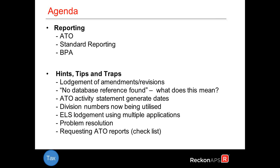We're also talking about hints, tips, and traps — including lodgement of amendments and revisions, pitfalls to be aware of, the 'no database reference found' message in reports, ATO activity statement generation dates, division numbers now being utilised, ELS lodgement using multiple applications, problem resolution steps, and requesting the ATO reports. We'll have a checklist for that as well.